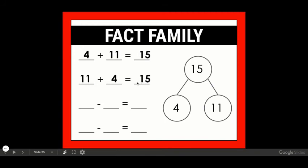Remember my trick. I know that my whole is going to go in my minuend, my bigger number. So if I plug in my 15, then I can just put in my two parts. So I have 15 minus 4 equals 11. Again, I know my 15 is going to go here. Flip-flop my two parts. 15 minus 11 equals 4. So now I have my two addition problems and my two subtraction problems, and that completes my fact family.